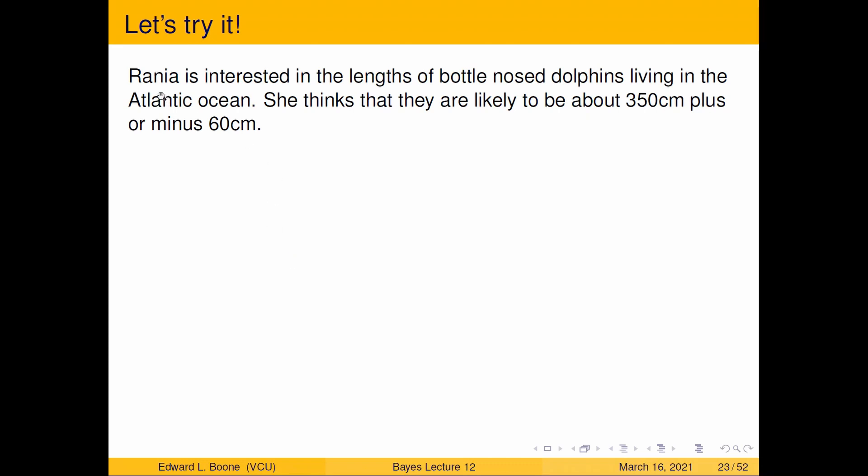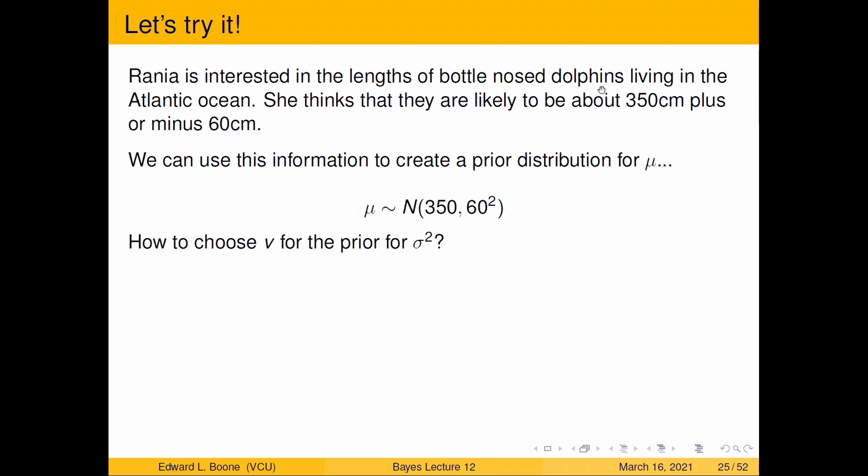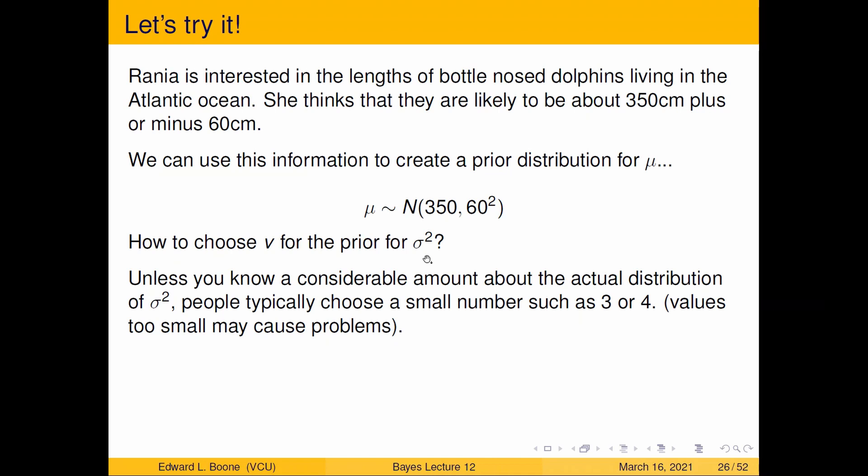So let's get to an example. Rania is interested in the lengths of bottlenose dolphins living in the Atlantic Ocean. She thinks they're likely to be about 350 centimeters long, plus or minus 60 centimeters. We can use this to create a distribution for mu. We've got the mean here, 350, and plus or minus 60 cm. Well, 60 squared might be our variance. How to choose nu for the prior for sigma squared? Well, unless you know a lot about what you're doing, usually pick a small number, maybe three or four for an inverse chi squared. If you chose number one, it has no mean or variance. If you chose two, it has a mean but no variance. Once we get to three, we actually get a variance. So don't go too small because it may cause problems later. So this is what we're going to choose, and the sigma squareds are going to match here.